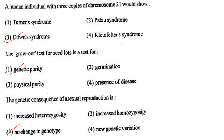Next one: A human individual with 3 copies of chromosome 21 would show option 1, Turner syndrome; option 2, Patau syndrome; option 3, Down syndrome; option 4, Klinefelter syndrome. Answer is option 3: Down syndrome.